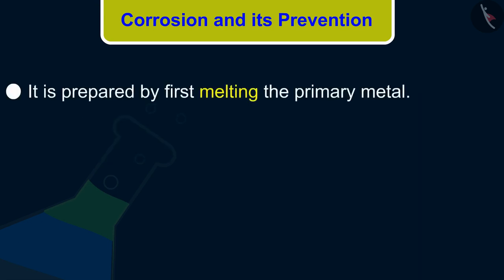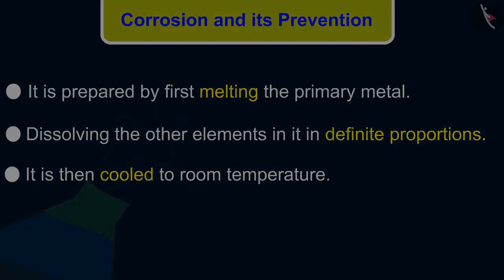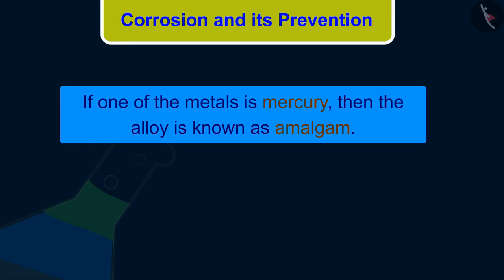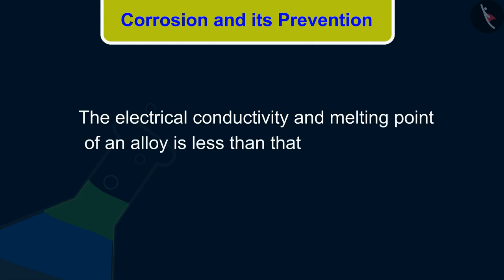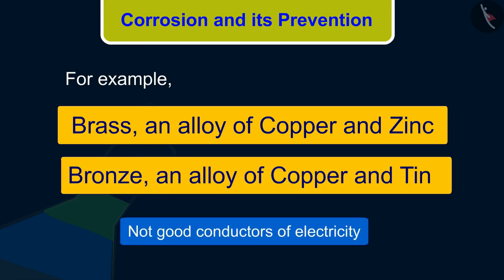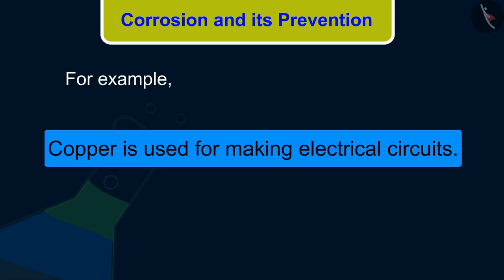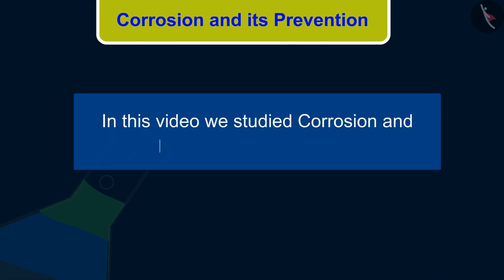An alloy is a homogeneous mixture of two or more metals, or a metal and a non-metal. It is prepared by first melting the primary metal and then dissolving the other elements in it in definite proportions, then cooled to room temperature. If one of the metals is mercury, the alloy is known as an amalgam. The electrical conductivity and melting point of an alloy is less than that of pure metals — for example, brass (an alloy of copper and zinc) and bronze (an alloy of copper and tin) are not good conductors of electricity, whereas copper is used for making electrical circuits. In this video we studied corrosion and prevention of corrosion.